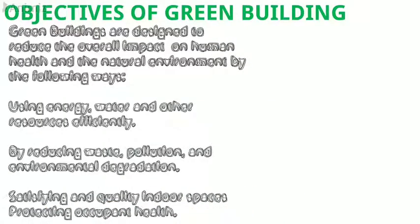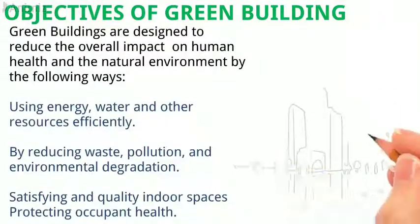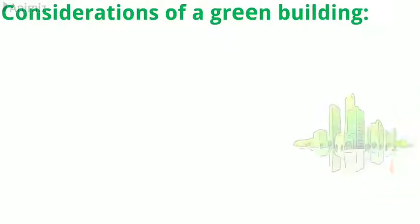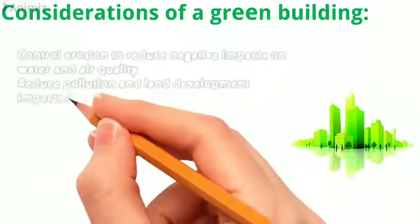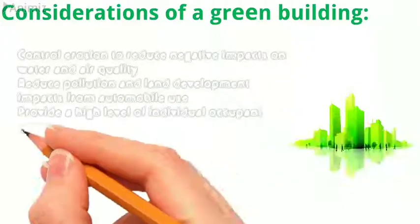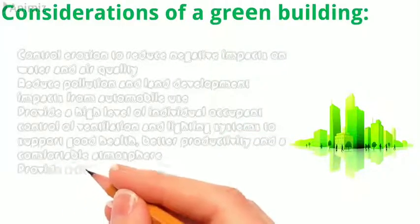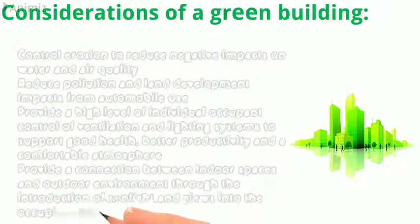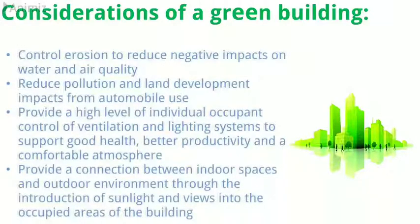Satisfying and quality indoor spaces protecting occupant health. Control erosion to reduce negative impacts on water and air quality. Reduce pollution and land development impacts from automobile use. Provide a high level of individual occupant control of ventilation and lighting systems to support good health, better productivity, and a comfortable atmosphere. Provide a connection between indoor spaces and outdoor environment through the introduction of sunlight and views into the occupied areas of the building.